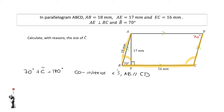Therefore, angle C is equal to 180 degrees minus 70 degrees, and that means angle C will be equal to 110 degrees. You are also allowed to use the other pair of parallel lines if you saw co-interior angles that way.